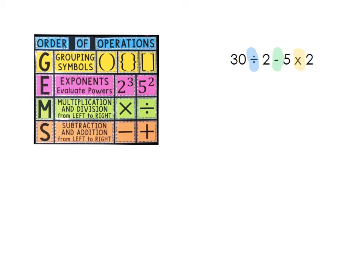Now we're gonna go to our GEMS poster on the left hand side of your screen and we're going to work through and ask ourselves, do we have any of the steps? Do we have any grouping symbols? Do you see any parentheses? No. So we're gonna cross that out. Do we have any exponents, those little numbers that are next to larger whole numbers? No, we don't have any of those.